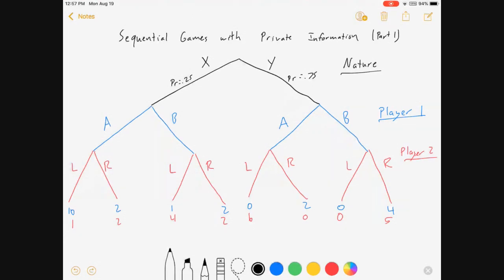We're gonna make this more interesting and I'm gonna introduce a problem with information here for player one. Player one does not know what tree the game is on. Player one cannot observe whether nature chose X or Y.